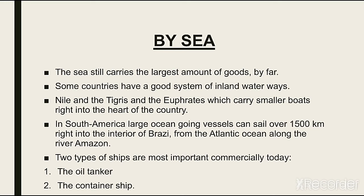Container ship میں سامان فیکٹری میں تیار ہوتا ہے اور بڑے سائز کے containers میں pack کیا جاتا ہے۔ پھر heavy vehicles کے ذریعے ساحل سمندر تک لایا جاتا ہے اور ship میں منتقل کر لیا جاتا ہے۔ Ship کا structure ایسا ہوتا ہے کہ اس کے اندر یہ پورے containers adjust ہو جاتے ہیں۔